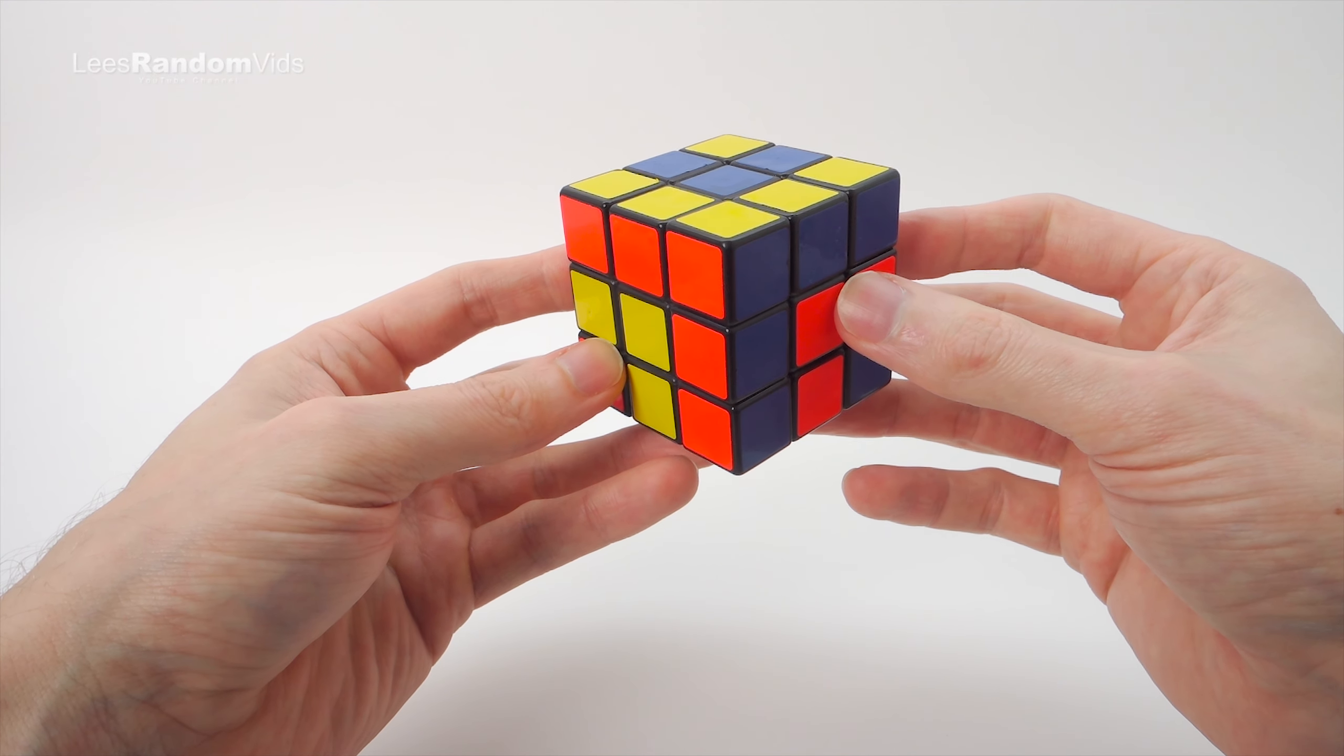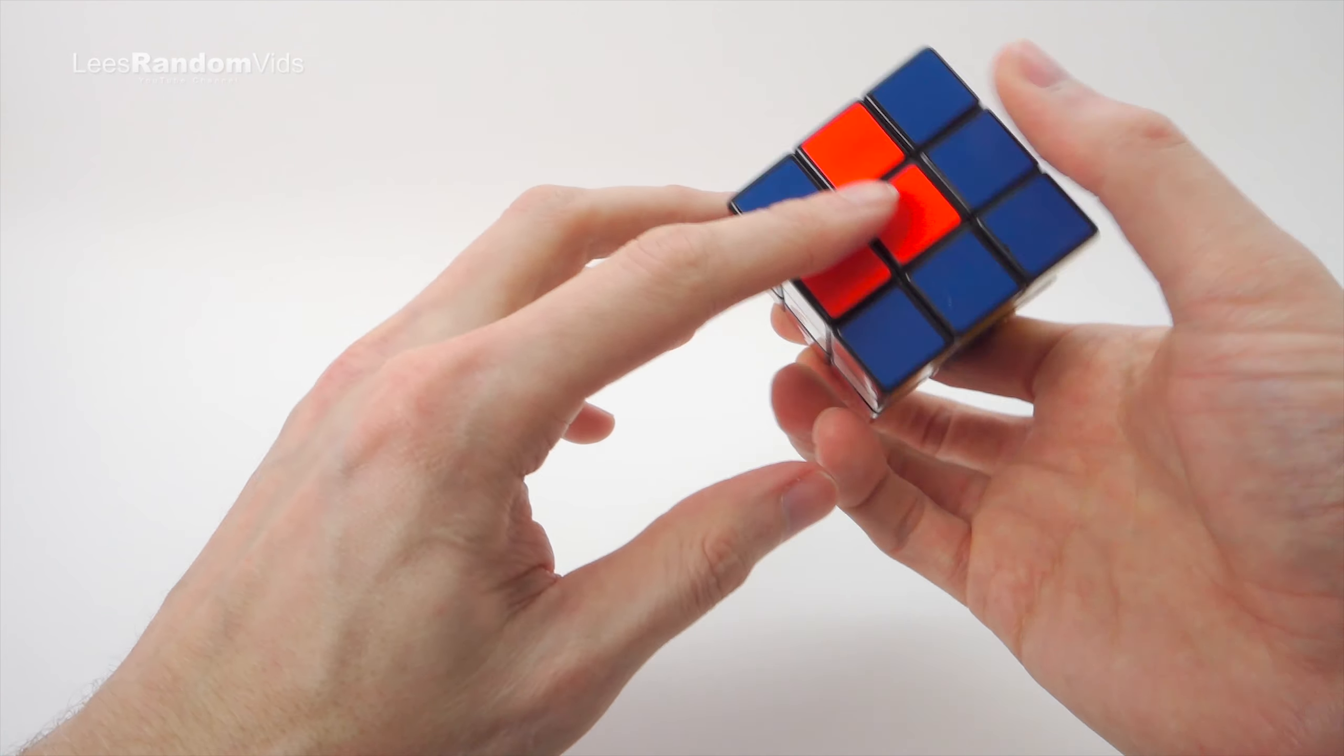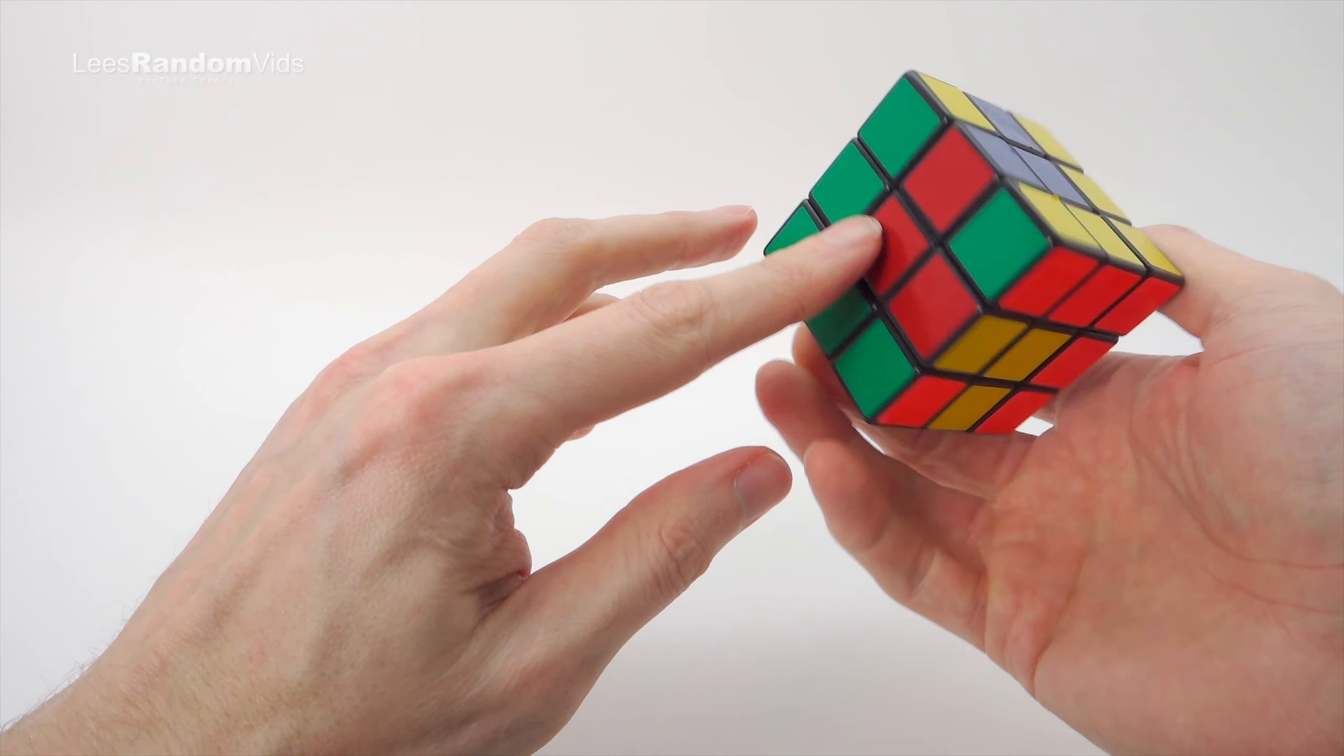In this video I'm going to show you how to do this anaconda pattern which snakes around the cube in a continuous line on a 3x3 Rubik's Cube.